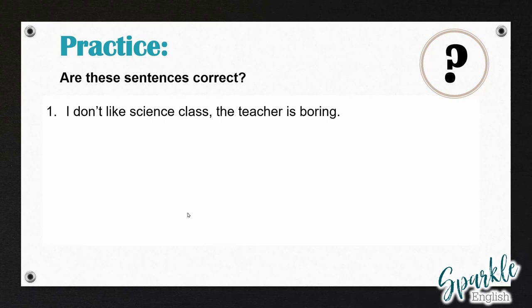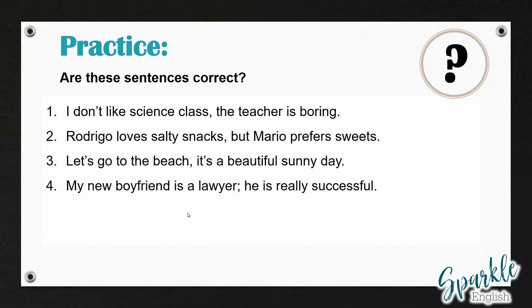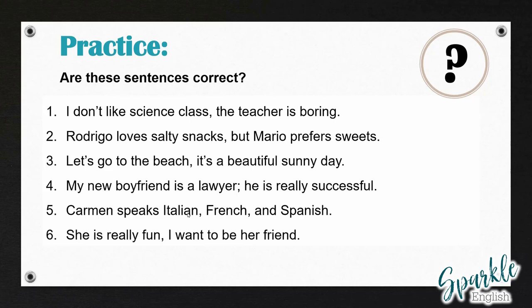Number one: 'I don't like science class, the teacher is boring.' Number two: 'Rodrigo loves salty snacks, but Mario prefers sweets.' Number three: 'Let's go to the beach, it's a beautiful sunny day.' Number four: 'My new boyfriend is a lawyer; he is really successful.' Number five: 'Carmen speaks Italian, French and Spanish.' Number six: 'She is really fun, I want to be her friend.' Take some time and see if you can identify any comma splices in these sentences.